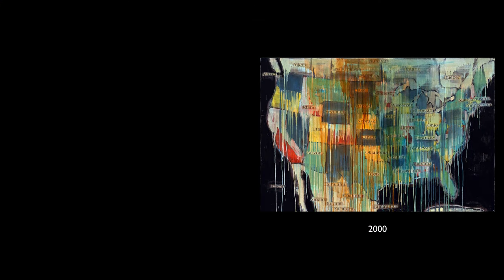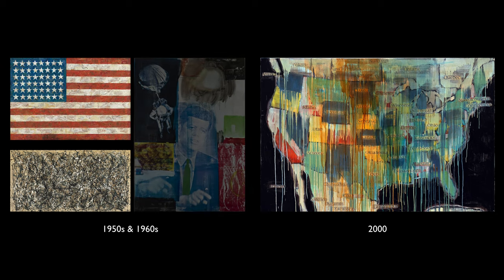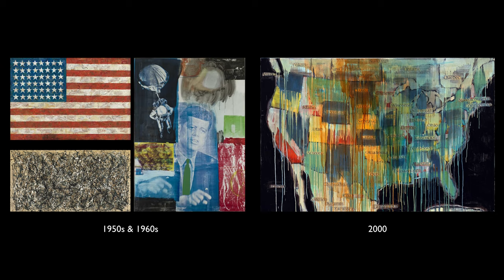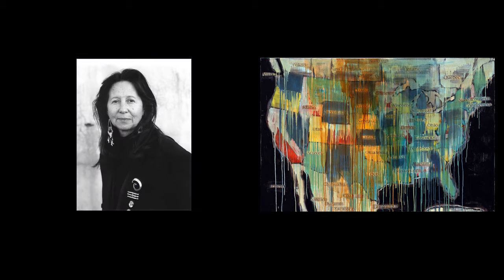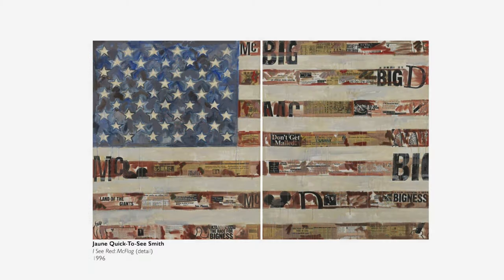State Names was created in 2000 — half a century after Pollock, Johns, and Rauschenberg, artists who so evidently had an impact on her work. But she's drawing on that mid-20th century art historical tradition to say something about her own identity and the identity of her people. Her work really challenges us to think about identity, heritage, and history in different ways.